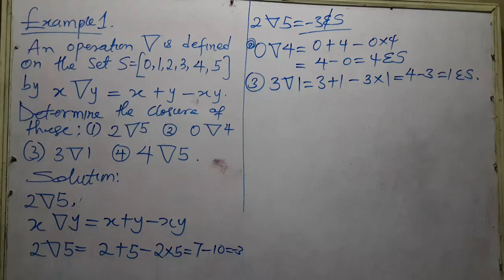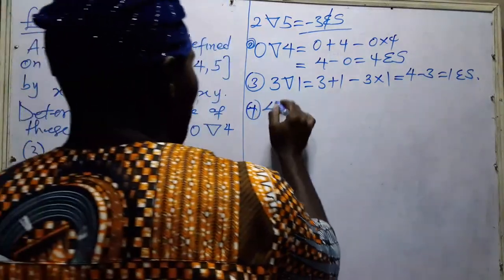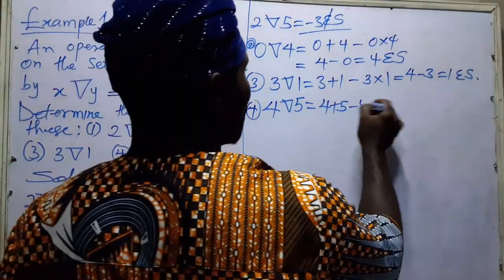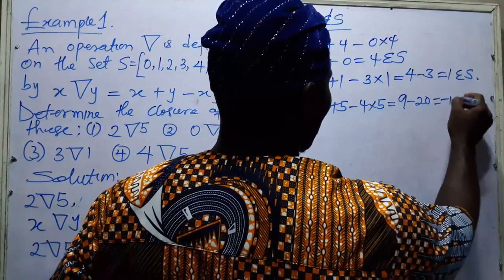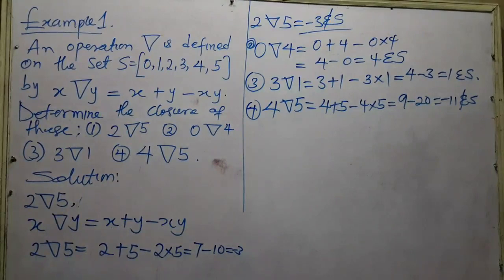For the fourth part, four operation five: four plus five minus four times five equals nine minus twenty, which gives us minus eleven. Minus eleven is not an element of X. So four operation five is not closed under the given set, which goes from zero to five.